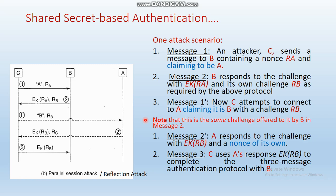Party A encrypts the RB value and sends it back — but the intruder C intercepts the message. C receives the encrypted message E(RB) along with a random number chosen by C. C then decrypts the encrypted message using the shared secret key K to retrieve the original RB value.